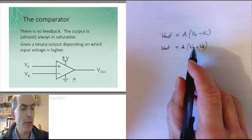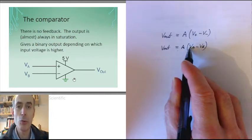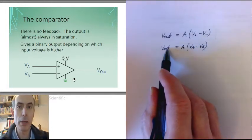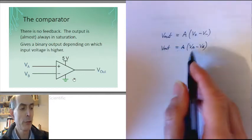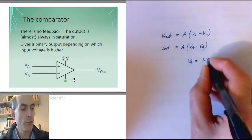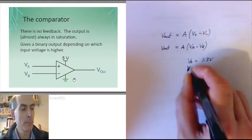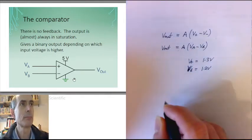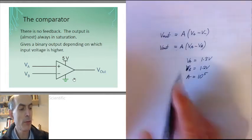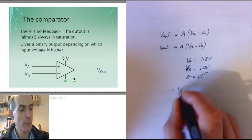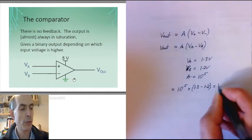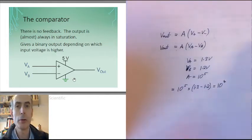Now, that would mean that if VA was greater than a few tens of microvolts above VB, then Vout will be saturating positive. Consider the case where VA is, let's say, 1.3 volts and VB 1.2 volts. Then if A is 100,000, the right-hand side of this equation would give us 100,000 times 1.3 minus 1.2, which is 10 to the power of 4, or 10,000.